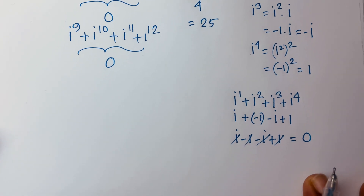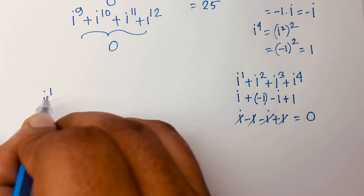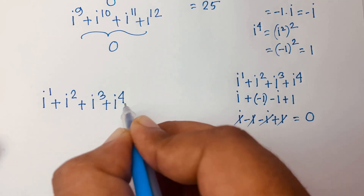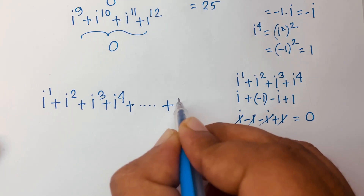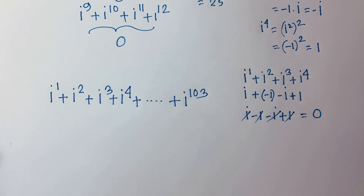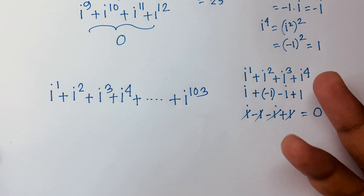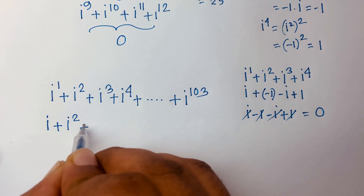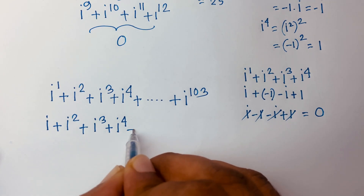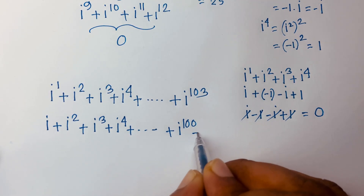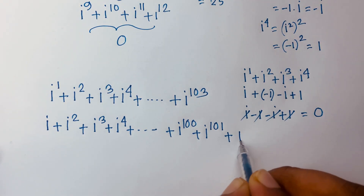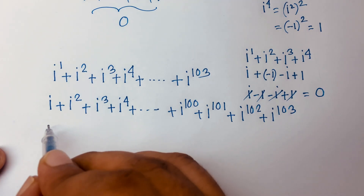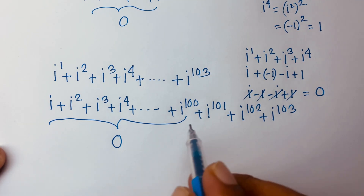Now I'll solve another problem. i to the power 1 plus i to the power 2 plus i to the power 3 plus i to the power 4 plus... and finally i to the power 103 — is equal to what? I can group this as: i plus i squared plus i to the power 3 plus i to the power 4, continuing up to i to the power 100 plus i to the power 101 plus i to the power 102 plus i to the power 103. The grouped part up to i to the power 100 is zero.